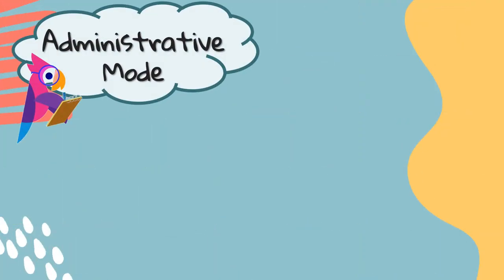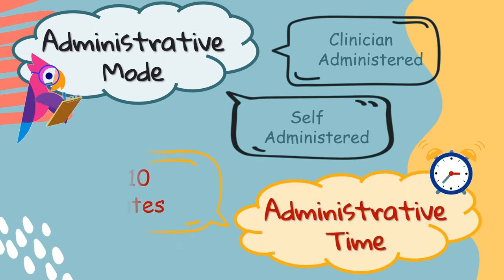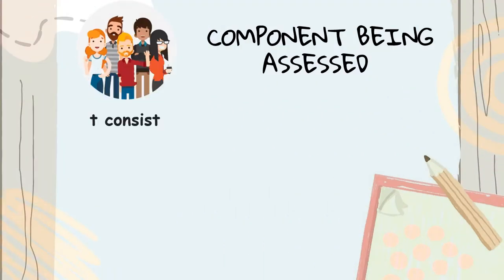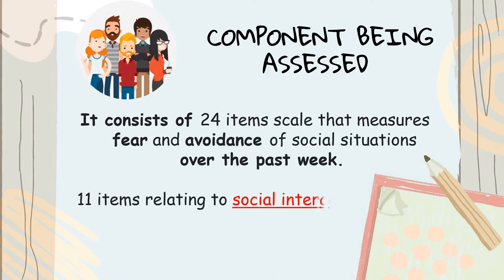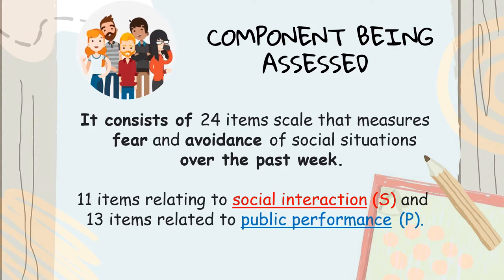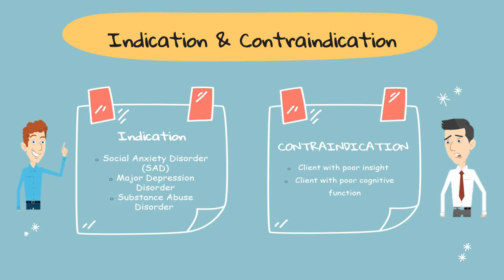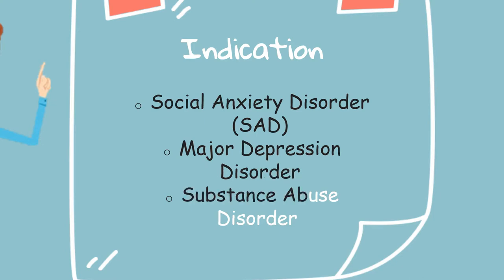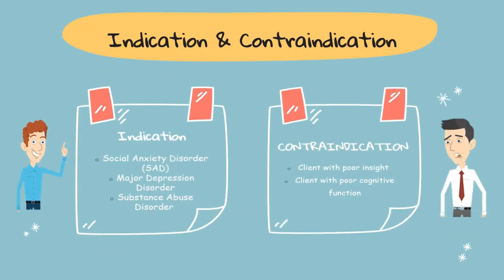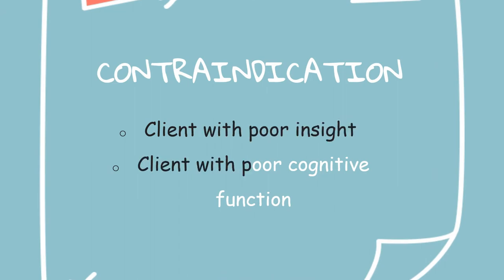This assessment can be done by clinician-administered or self-administered, and it takes about 3 to 10 minutes. It consists of 24 item scales — 11 items related to social interactions and the rest related to public performance. The indications are social anxiety disorder, major depressive disorder, and substance abuse disorder. The contraindications are clients with poor insight and poor cognitive function.